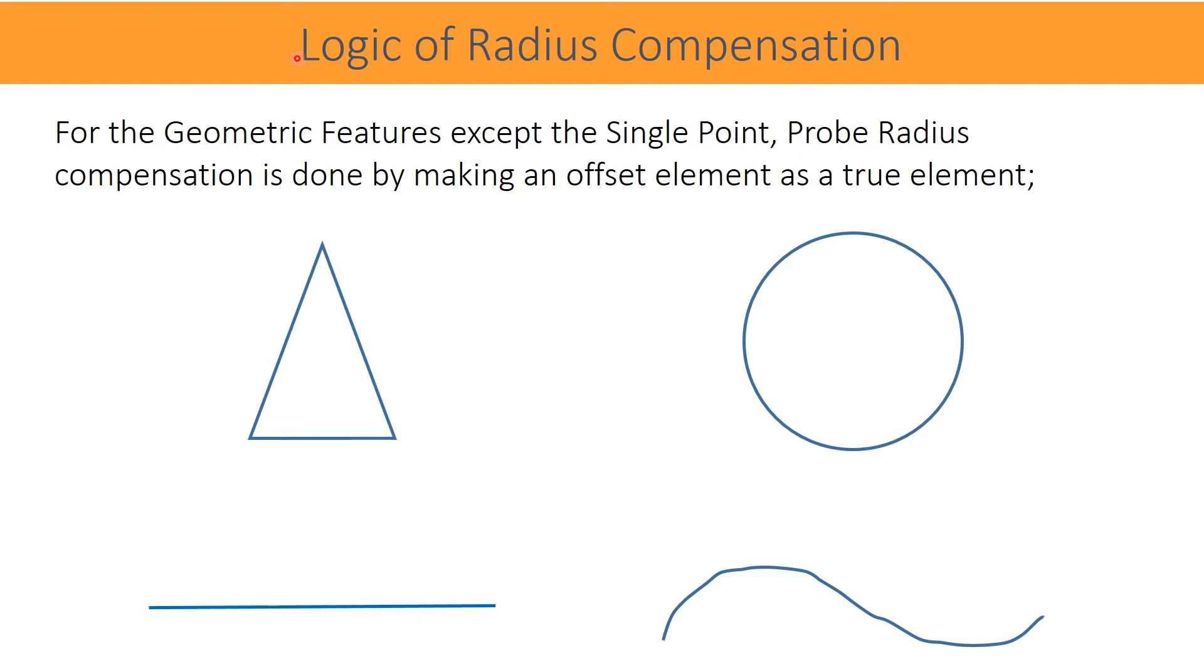Now it is confirmed that point coordinates are transferred from the center of the stylus and radius correction is essential. There are various methods available in the CMM software to correct the radius. The most general and default method is to offset a complete geometry profile. This method runs through software as a default method. In this, a logic used is whether geometry is measured from inside or outside or from below or above.